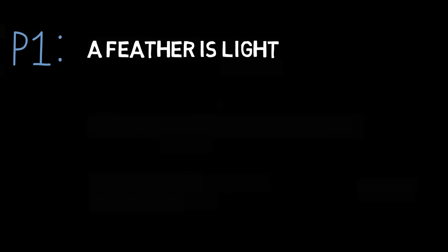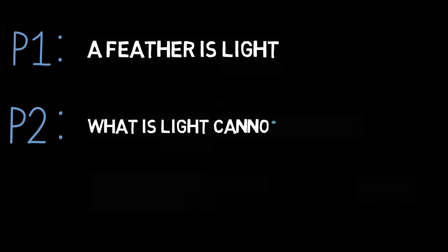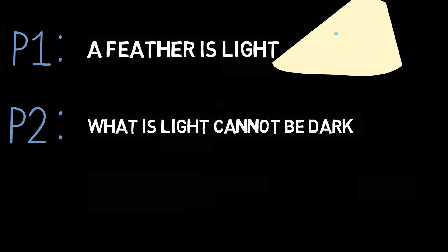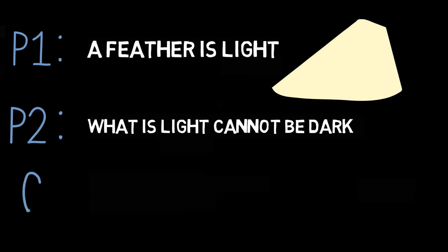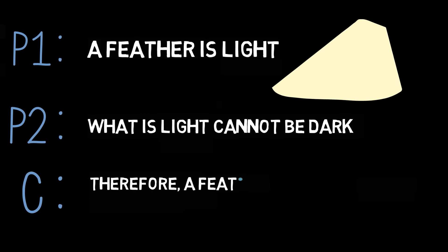Consider this other argument. Premise one: a feather is light. Premise two: what's light cannot be dark. Conclusion: therefore, a feather cannot be dark.